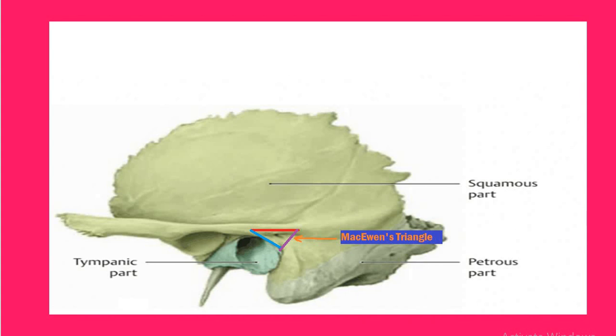The mastoid antrum lies around 1.5 to 2 centimeters deep to the triangle in adults, but some textbooks even mention it is 1 centimeter deeper. What are the boundaries of McEwan's Triangle?